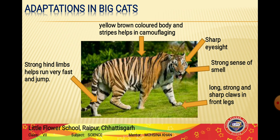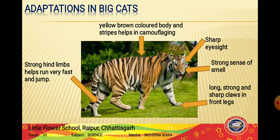Tigers have a yellow-brown color with black stripes, and lions also have a yellow-brown body color. These colors help them camouflage - blending with their surroundings so they are not easily visible. This camouflage both protects them from their predators and helps them catch their prey by remaining unseen.